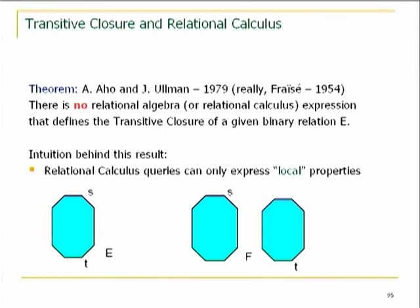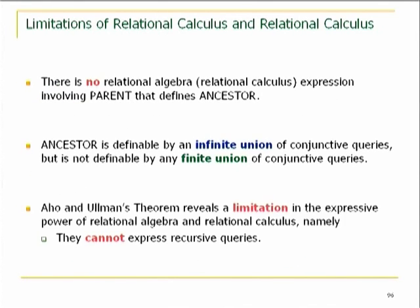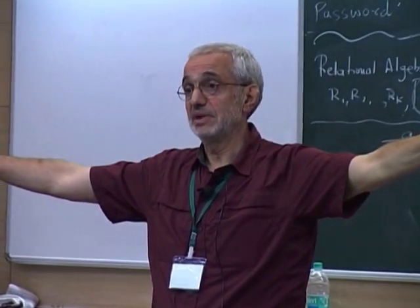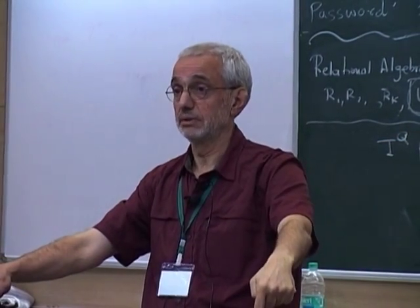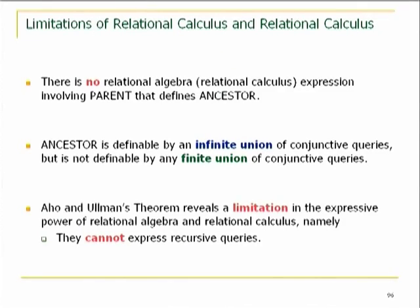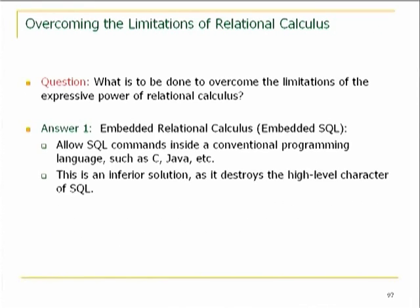Now we understand the reason. Calculus is first-order logic — it can only express local properties. You can't tell apart, using first-order formulas, graphs such as cycles and unions of two cycles. In particular, if you have a database that has information about parents, you cannot write an algebra or calculus expression that defines ancestor. If you think about paths in a graph or ancestor, this is an infinite union of conjunctive queries, but the result tells you it's not equivalent to any finite union. This reveals a severe limitation in the expressive power of algebra and calculus.